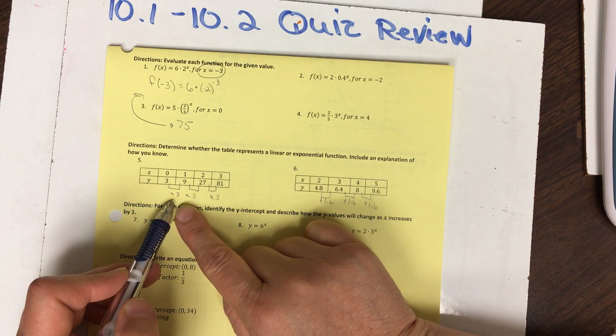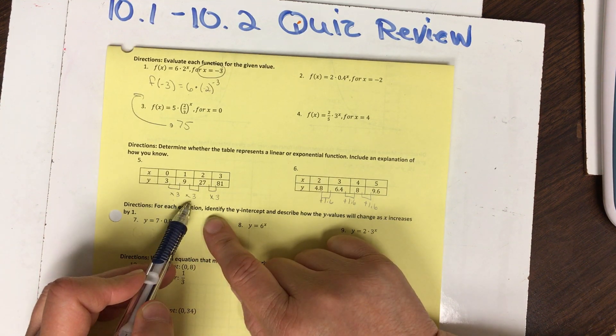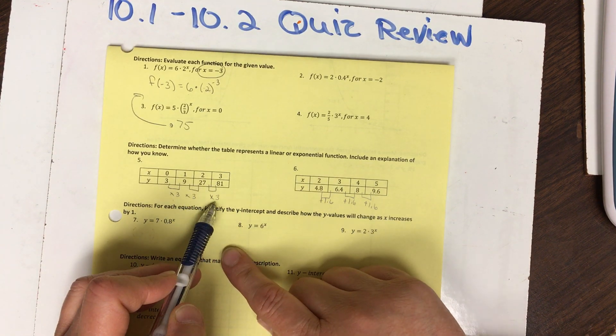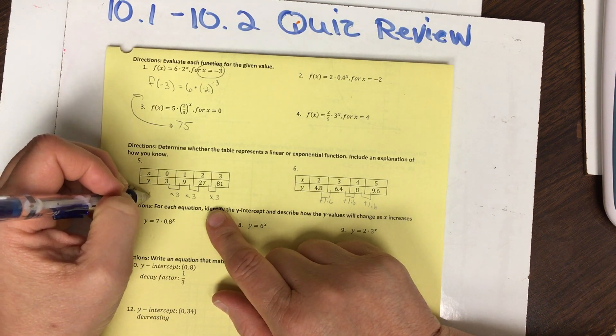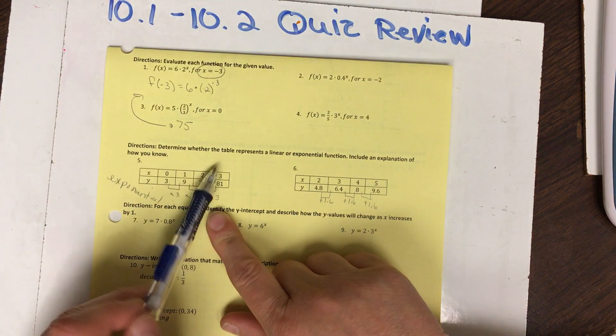And over here, to get from here to here we multiply by 3. From here to here, multiply by 3, here to here, multiply by 3. So I know that this is exponential. And then I would write because we're multiplying by 3.